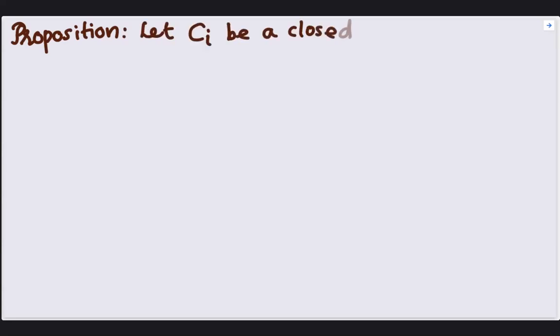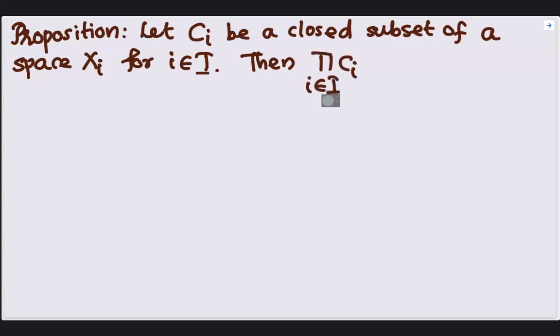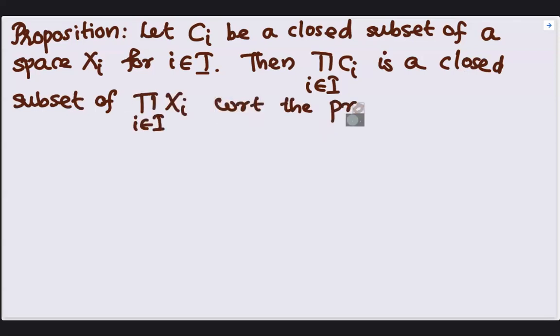Proposition: Let C_I be a closed subset of a space X_I for i element of I. Then product C_I over i element of I is a closed subset of product X_I with respect to the product topology.